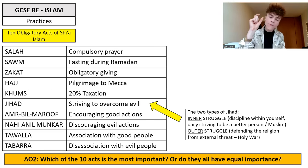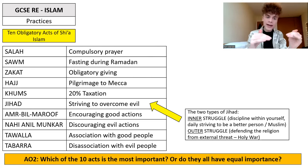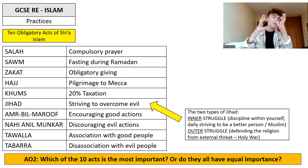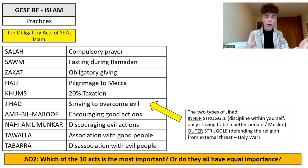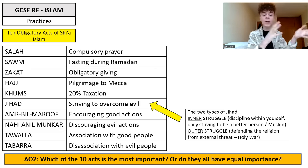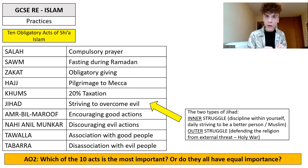The final four obligatory acts — encouraging good actions, discouraging evil actions, association with good people, and disassociation with evil people — do make up the ten obligatory acts, but for this exam, you don't need any deeper knowledge on those specific ones.